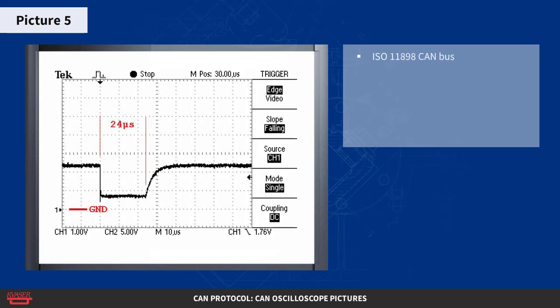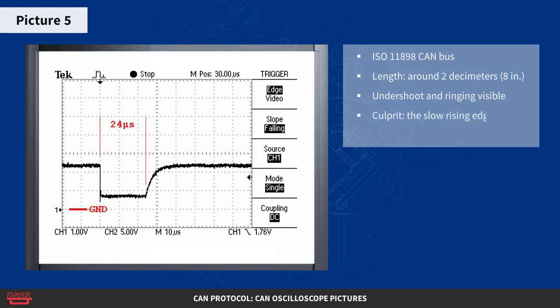Here's the same CAN bus in another time scale. The CAN bus was around 2 decimeters, or 8 inches, long. The undershoot and ringing is visible, but in this case clearly not important. This time the slow rising edge is the culprit.